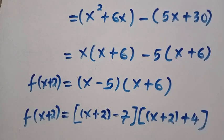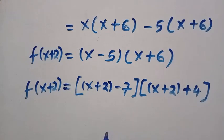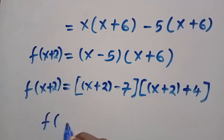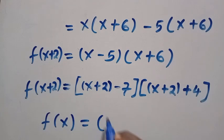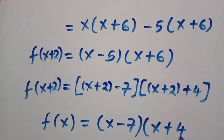Then it is left to us to replace x plus 2 with x. Anywhere we see x plus 2, we are going to change it to x. Therefore, we have f(x) equals (x plus 2 is now changing to x, then minus 7), both enclosed in a bracket, multiply by (also x plus 2 changed to x, then plus 4).